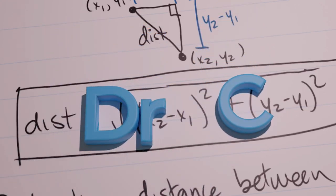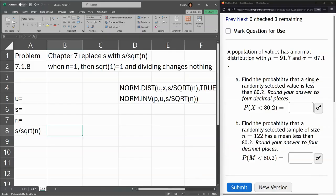We're looking at problem 7.1.8, and in this we have a normal distribution. We have a mean of 91.7 and standard deviation 67.1. We want to find the probability x is less than 80.2.